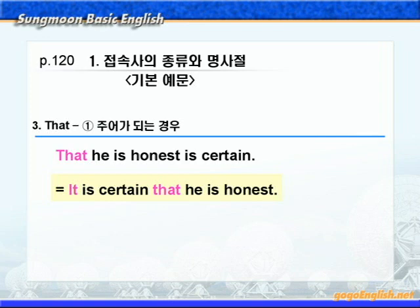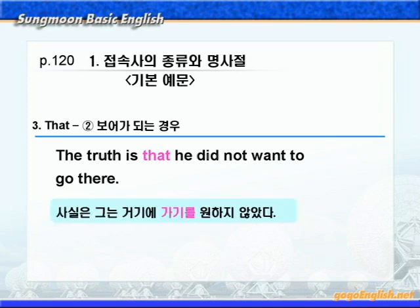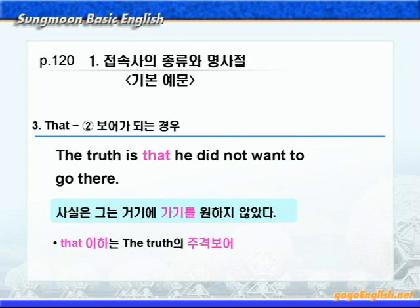다음 2번이죠. 이번에는 that절이 보어가 되는 경우를 보겠습니다. 'The truth is that he did not want to go there.' 사실은 그는 거기에 가기를 원하지 않았다. 종속접속사 that 이하는 명사절로 주어인 the truth의 주격 보어가 됩니다. 이 경우는 'the truth is that ~' 이런 식으로 '사실은 ~라는 것이다' 이런 의미로 하나의 구문으로 알아주시는 것이 좋겠습니다.